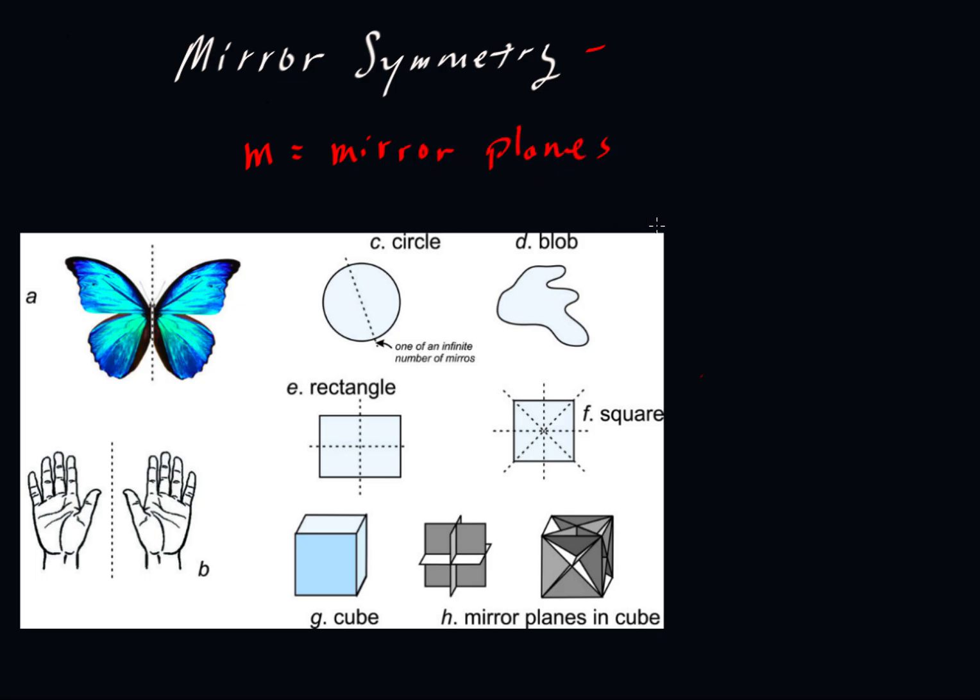We're going to use this very nice diagram from Dexter Perkins in his online textbook in mineralogy to illustrate. So he shows here a butterfly and there is a vertical mirror plane. You notice that everything on this left-hand side of the butterfly contains all the information we need. If we take this left-hand side of the butterfly and combine it with this mirror plane, we can now recreate or create this right-hand side of the butterfly.